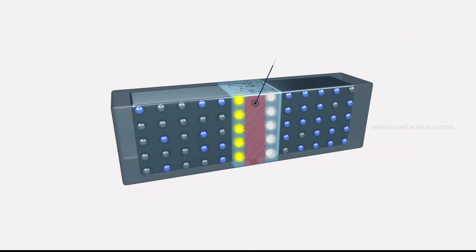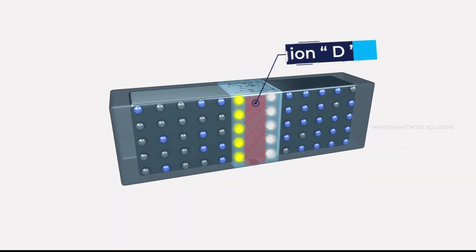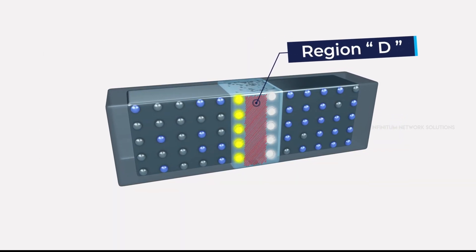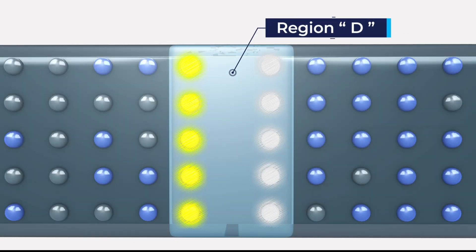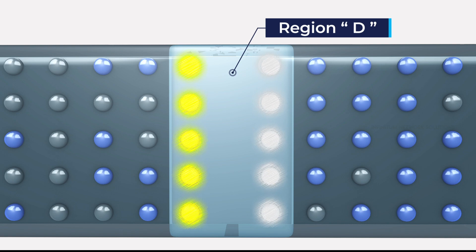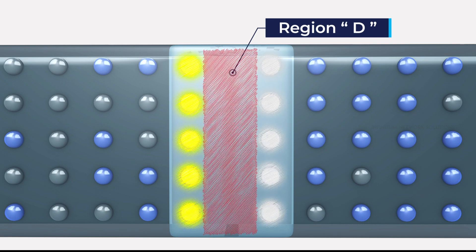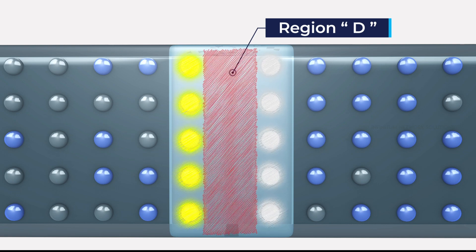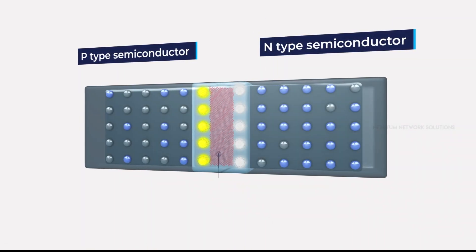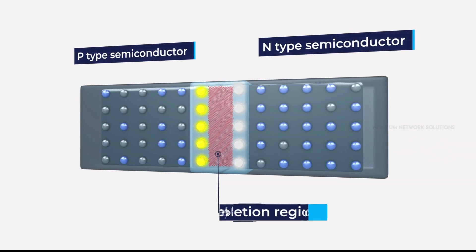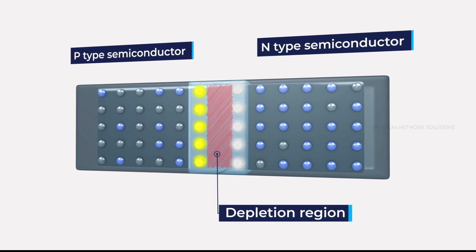On either side of the junction, the region D becomes free from mobile charge carriers. That is to say, on the N-type side of D, no free electrons exist, and on the P-type side of D, no holes exist. In the region of D, only immobile donor and acceptor ions exist. The region close to the PN junction is depleted of mobile charge carriers and is called the depletion region.